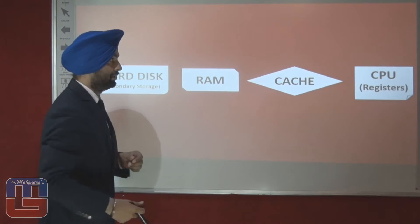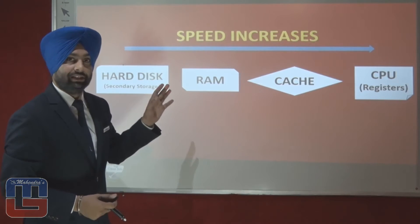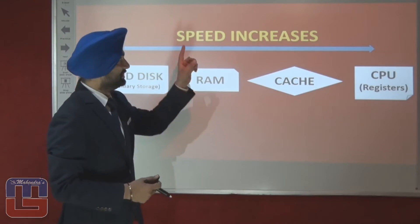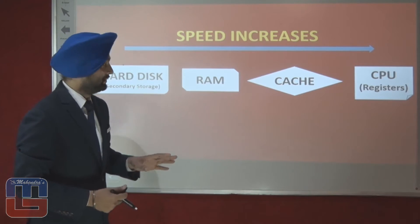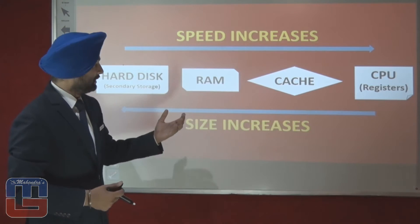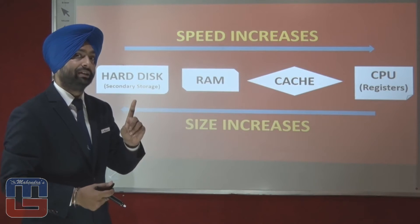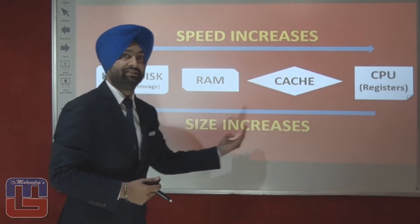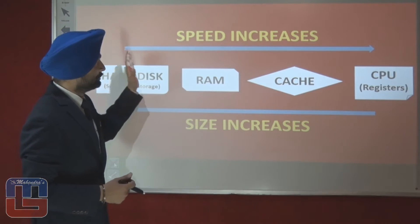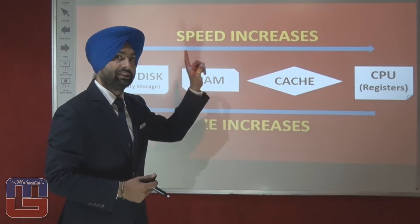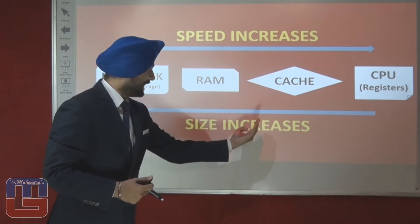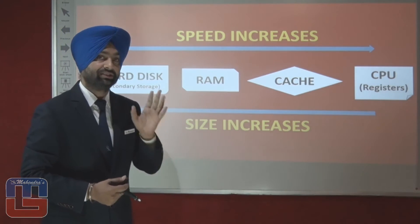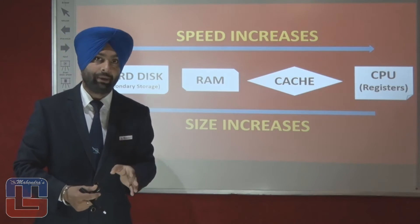As we go from hard disk to RAM, and from RAM to cache, the speed increases. Conversely, as size increases, speed decreases. This is an important point to remember.